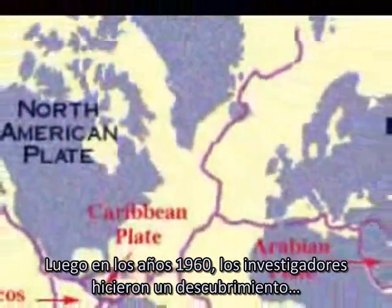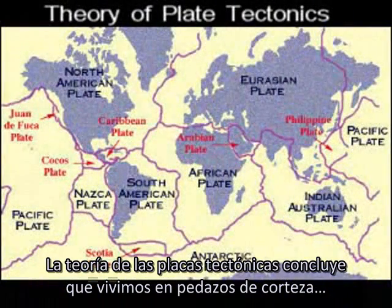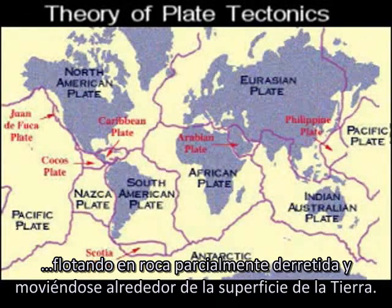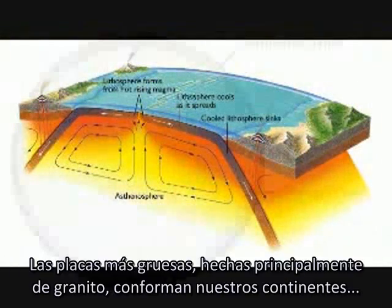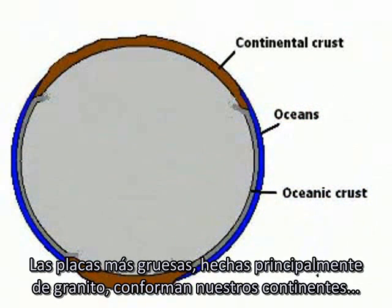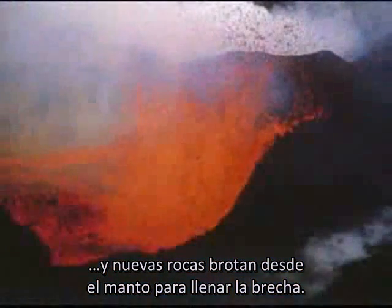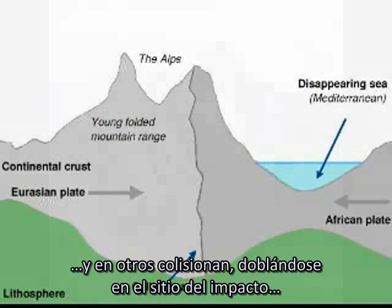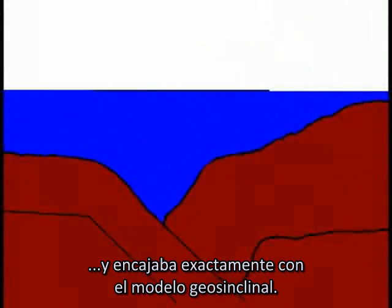Then, in the 1960s, researchers made a discovery that transformed our understanding of the Earth and its geological history. The theory of plate tectonics concludes that we live on pieces of crust floating on partially melted rock as they drift around the Earth's surface. It's likely these crustal plates are driven by convection currents in the Earth's upper mantle. Thicker crustal plates, made mostly of granite, make up our continents. The oceans mostly fill the lower and thinner crustal plates, made of basalt. Now the uplift could be explained, and it fitted exactly with the geosyncline model.